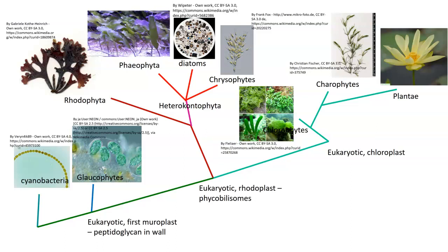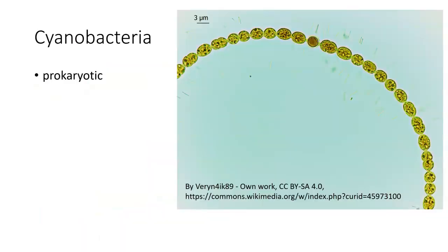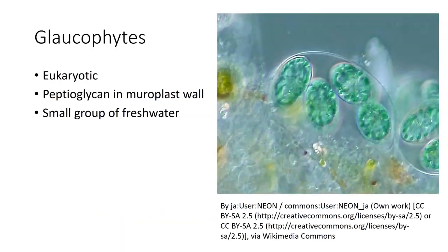When we look at algae we can see a progression from one group to the next based on the types of material found in them. Cyanobacteria are prokaryotic. Glaucophytes are eukaryotic — they have peptidoglycan in the muroplast wall. They're a small group of freshwater algae, and they range from single-celled to a little bit beyond single-celled.